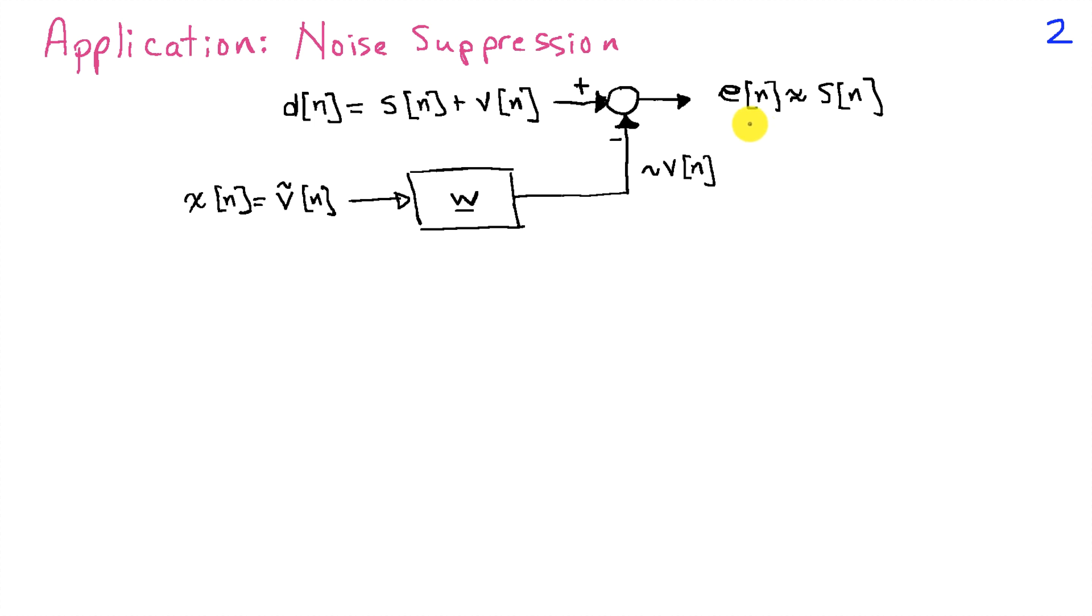And if we do a good job, the error that we get out here is just the signal that we're interested in, s of n. So this process has suppressed this noise.